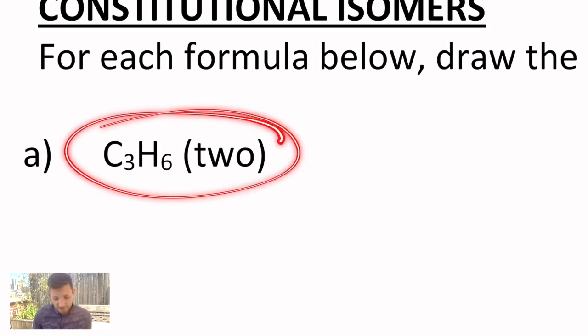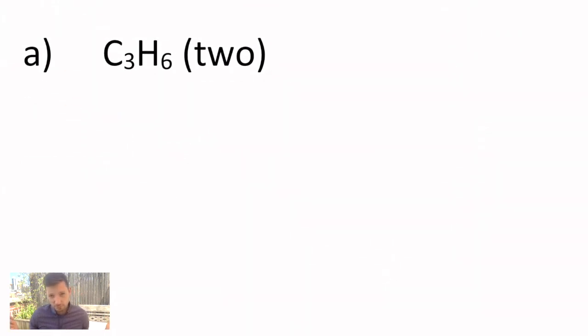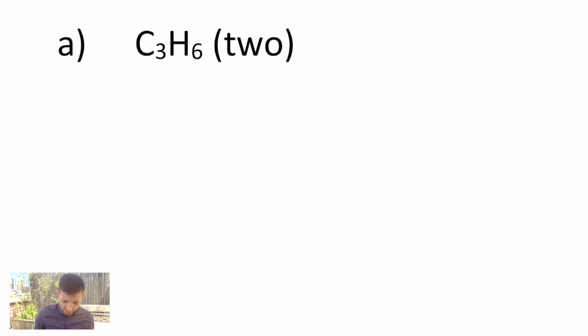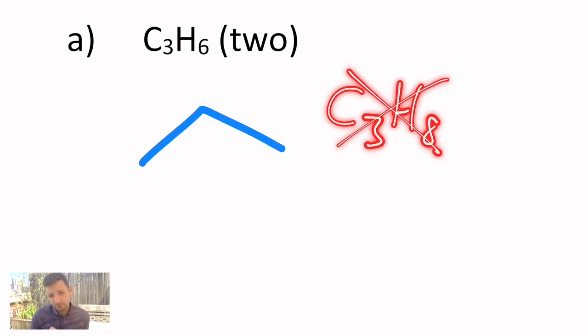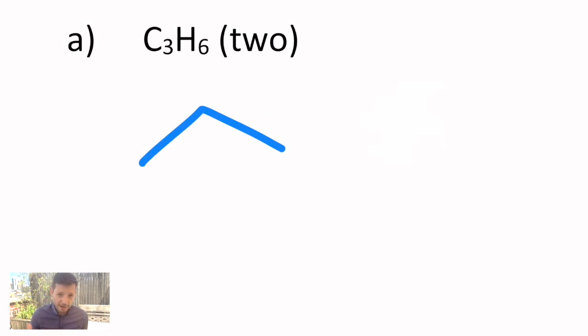So starting off with C3H6, it says it wants two different ways to do it. Let's review a little bit of line structure. Remember every point connected by lines is a carbon, so three carbons would look like that. And if I stopped there, that would actually be C3H8, and that doesn't fit the formula. So how do I take away two hydrogens? I have to share more electrons. In this case you'll need a double bond, so we would have propene.